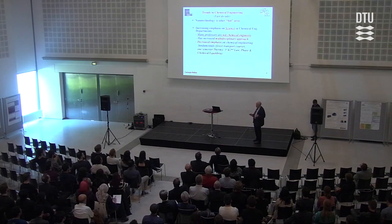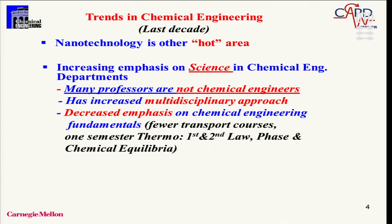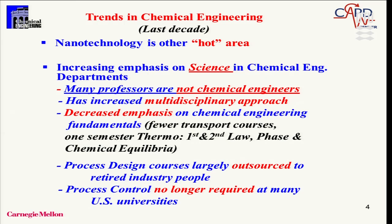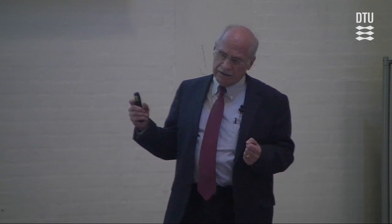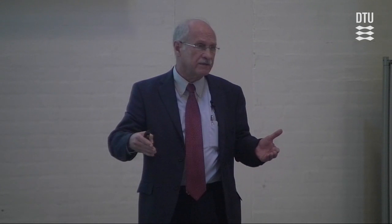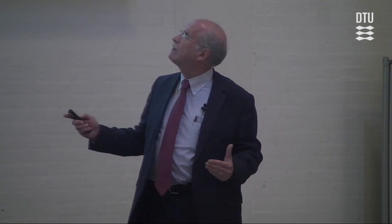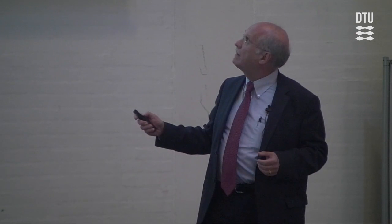In terms of education, there's been a decreased emphasis on fundamentals. There are now fewer transport courses — sometimes only two, sometimes just one. Thermodynamics has been reduced to a single semester covering first and second law, and phase and chemical equilibrium. In process systems engineering, the impact has been even greater: many universities have the process design course taught by an adjunct, often a retired engineer from industry. Process control is no longer required at many universities. We see a clear shift in education, and new professors in chemical engineering no longer publish in traditional chemical engineering journals because of the move from engineering towards science.